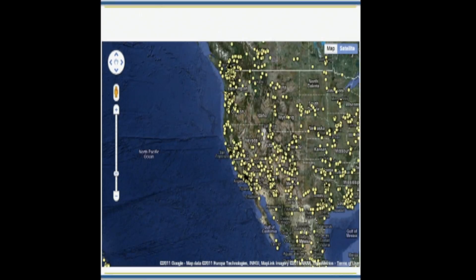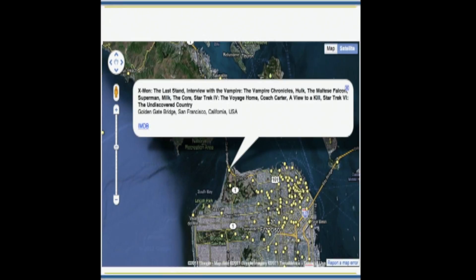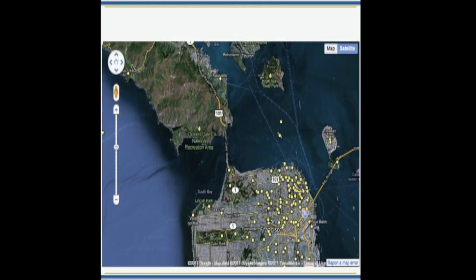So zoom in here. Enhance. Enhance. Alright. Downtown San Francisco. Every dot is one or more films. And so you can just click around and see what was filmed everywhere.